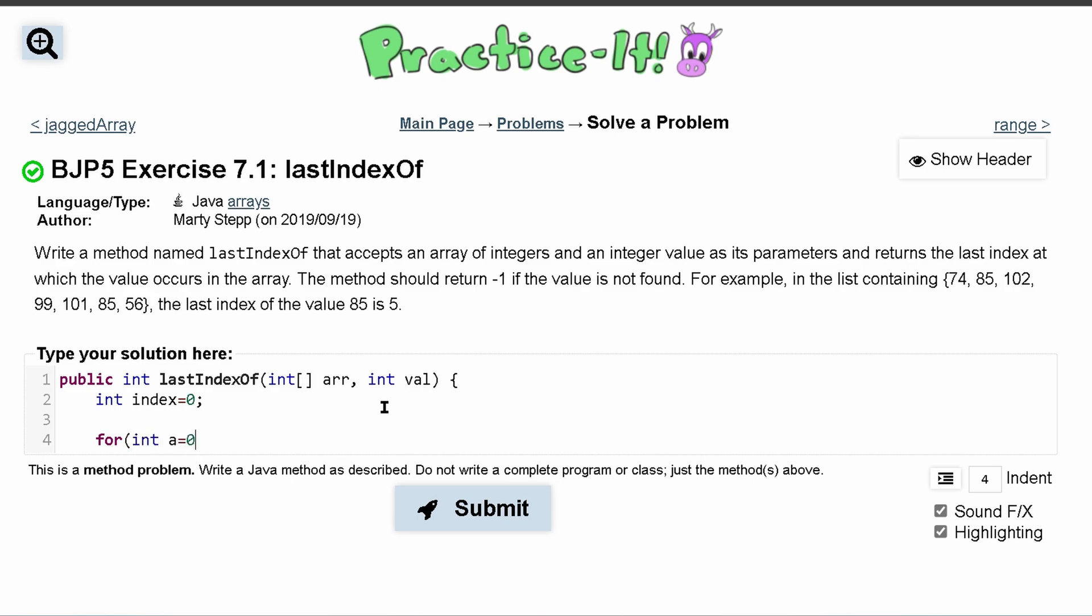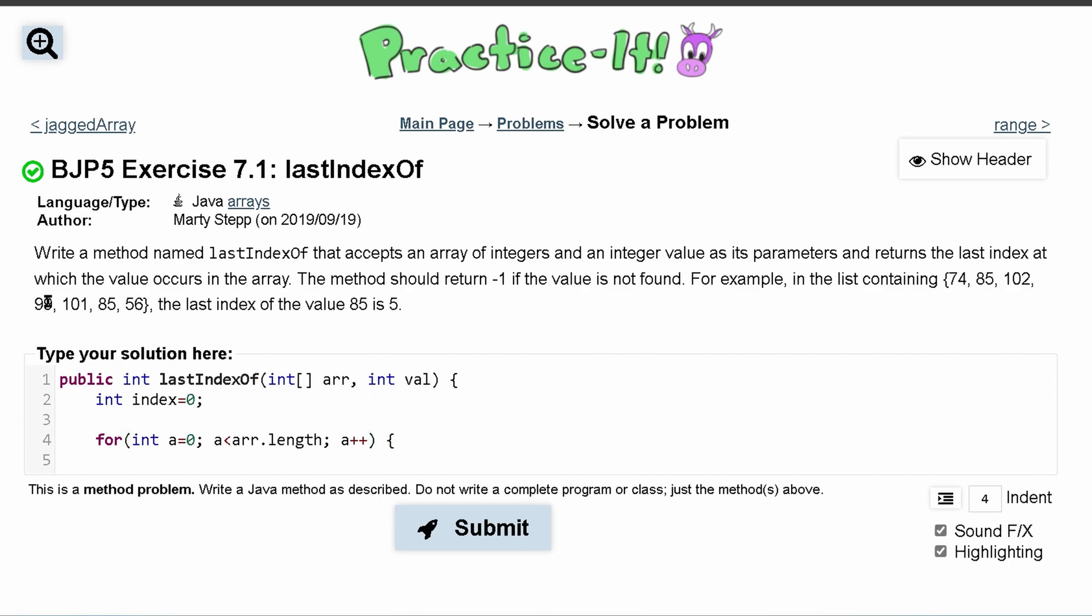So for int a equals zero, this is just some arbitrary constant. We want to run this as long as it's less than our array length, that kind of makes sense. We have our a plus plus, and then we can go inside of this for loop where we're going to have our conditional check. So that's this if statement.